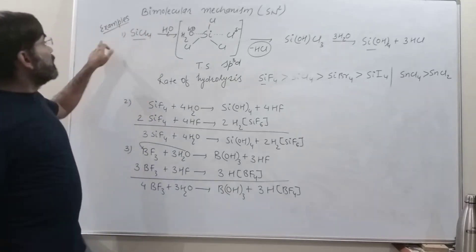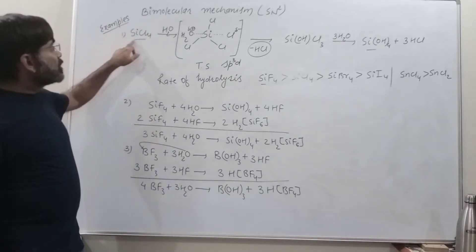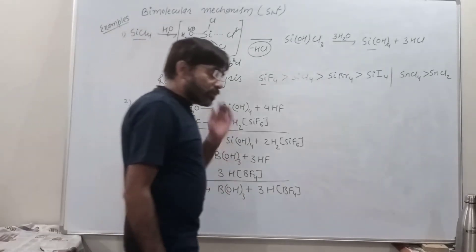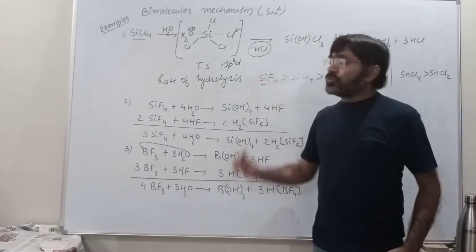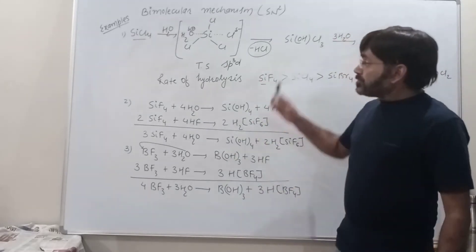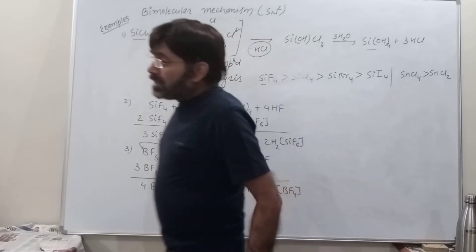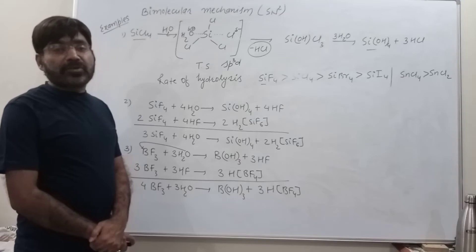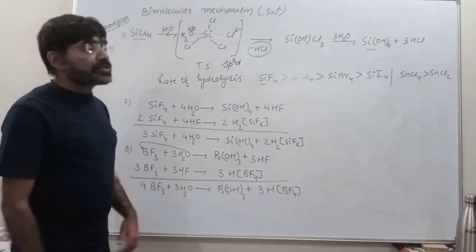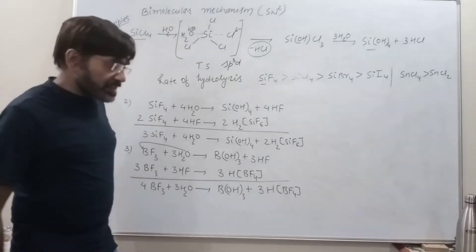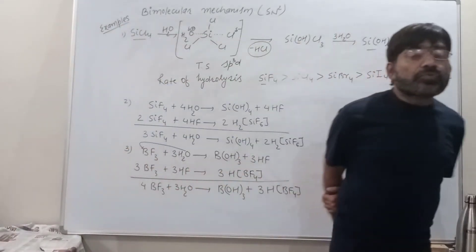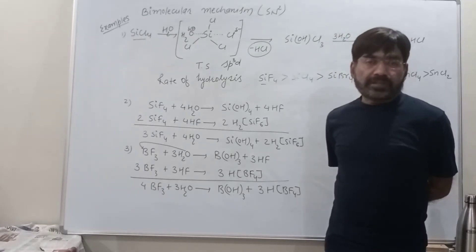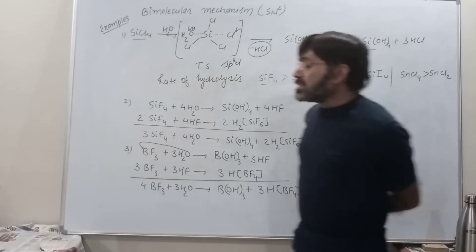The very first example of an SN2 reaction is the hydrolysis of SiCl4. In SiCl4 hydrolysis, it is very much easier in comparison to the hydrolysis of CCl4. This is the first reasoning question: SiCl4 undergoes hydrolysis very easily while the hydrolysis of CCl4 was quite different. So why is this so?